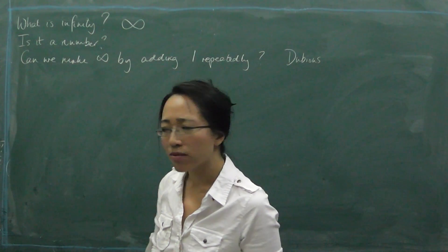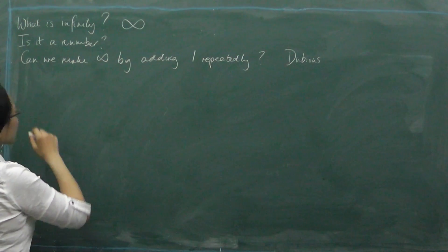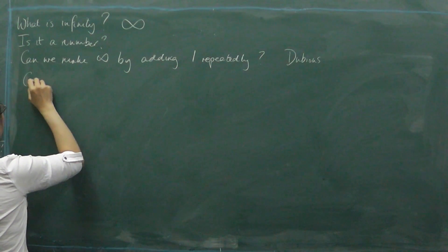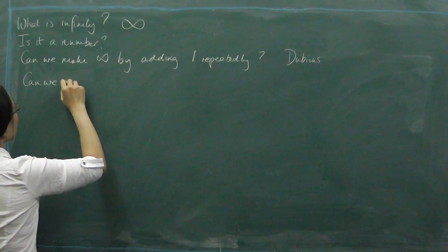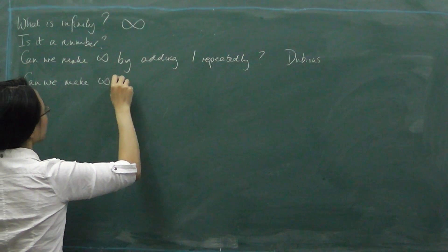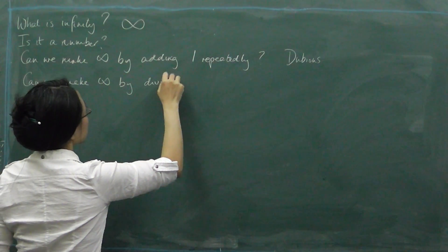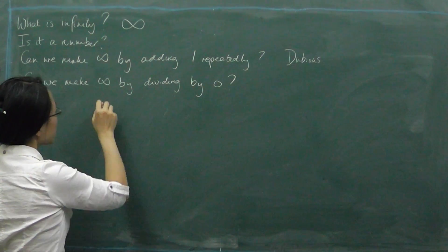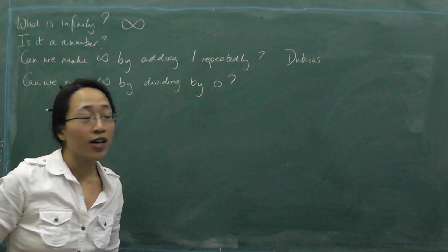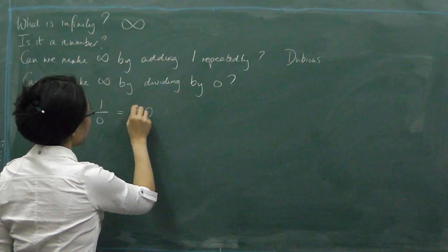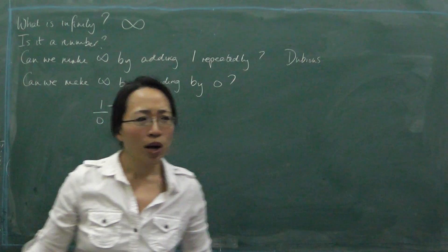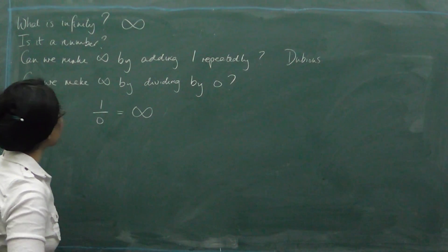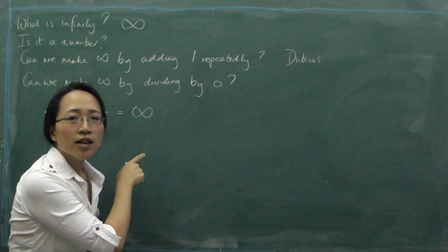So let's try something else. What else do you think makes infinity? Well, people often say that if you divide by zero, you get infinity. So let's try that — can we make infinity by dividing by zero? You might try doing one divided by zero and declaring that that's infinity. Let's try doing some things with that. What if we multiply both sides of that by zero?